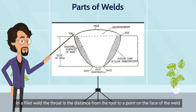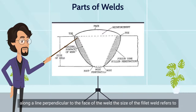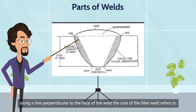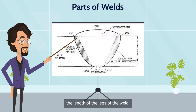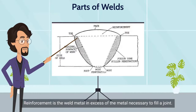In a fillet weld, the throat is the distance from the root to a point on the face of the weld along a line perpendicular to the face. The size of the fillet weld refers to the length of the legs of the weld. Reinforcement is the weld metal in excess of the metal necessary to fill a joint.